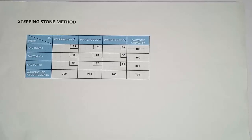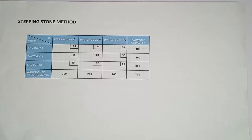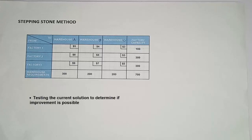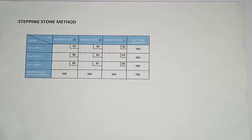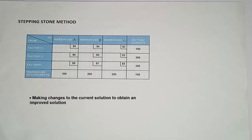In this video I'm going to show you how to determine the optimal solution of a transportation problem using the stepping stone method. The stepping stone method is an iterative technique for moving from an initial feasible solution to an optimal feasible solution. There are two distinct parts to this process: one is testing the current solution to determine if improvement is possible, and making changes to the current solution to obtain an improved solution.